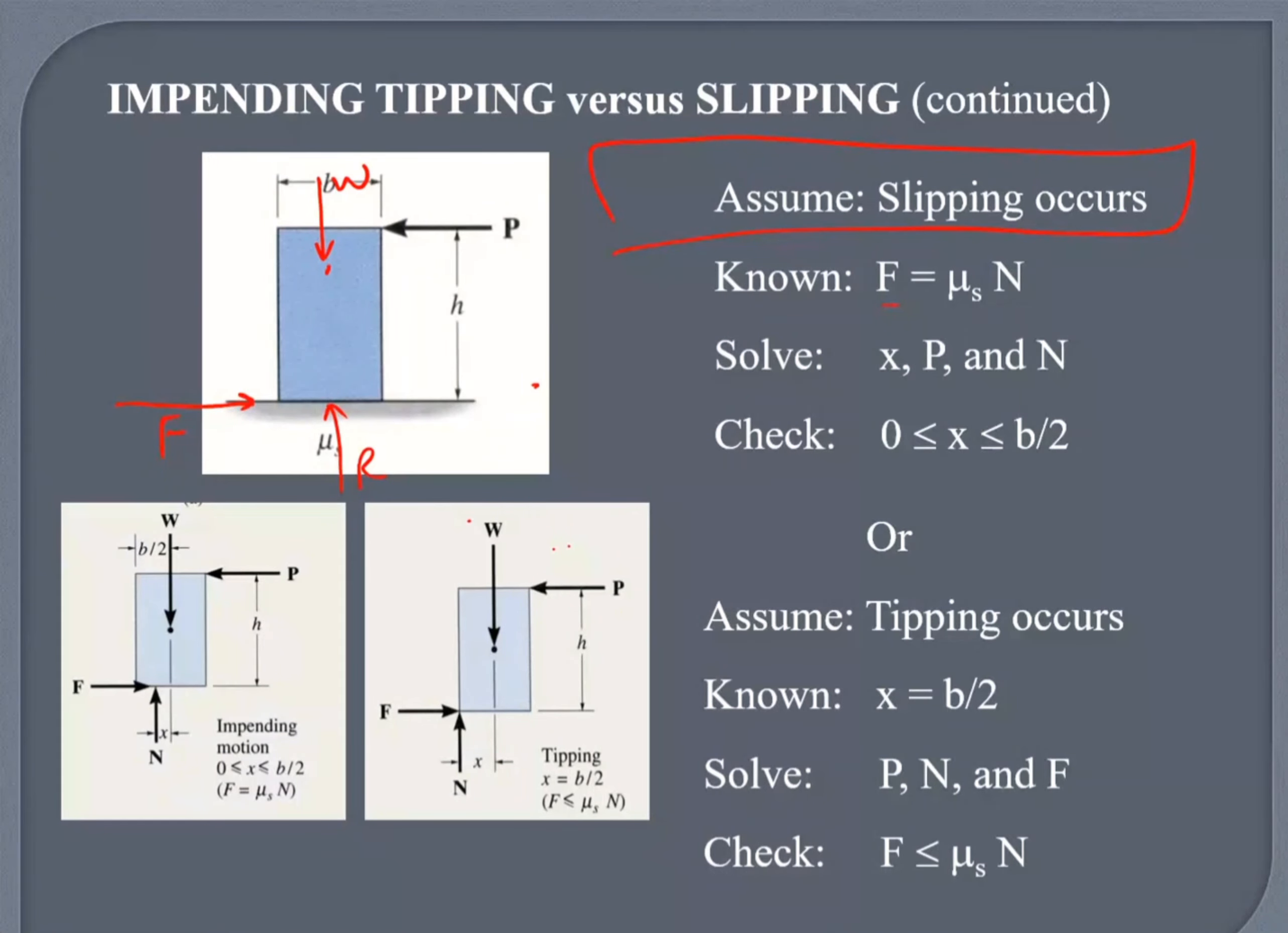If I assume it's going to tip, it means my x value. This x is equal to half width of the body. And I will solve my problem. Once I solve my problem, I will check the value of F. And my F value should be less than mu Sn. Because it did not slip.